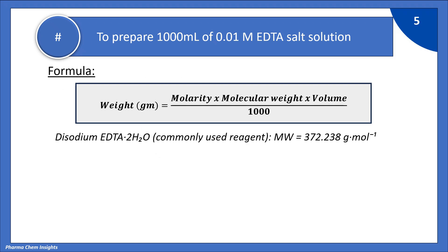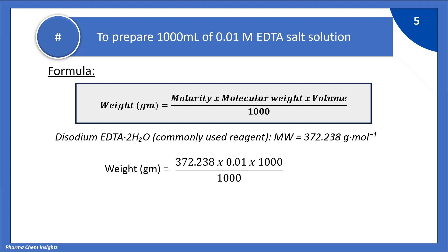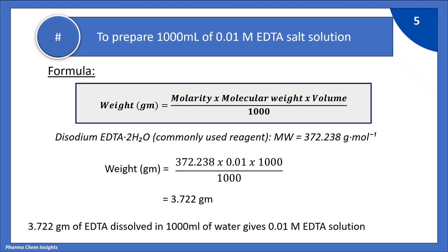Now let's see how to prepare 1000 ml of 0.01 molar EDTA salt solution. The formula is: weight in grams equals molarity multiplied by molecular weight multiplied by volume, divided by 1000. So for 0.01 molar and volume of 1000 ml, substituting these values gives: weight = 372.238 × 0.01 × 1000 / 1000 = 3.722 grams. Thus, 3.722 grams of EDTA dissolved in 1000 ml of water gives you a 0.01 molar EDTA solution.